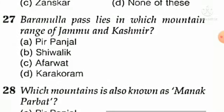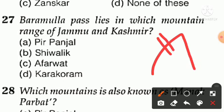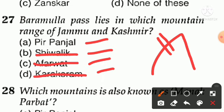Question number twenty-seven: Baramula Pass lies in which mountain range of Jammu and Kashmir? Option A — Peer Panjal, option B — Shivalik, option C — Aferwat, option D — Karakoram. Option D is not right, option C is not right, option B is not right. The answer is Peer Panjal — Baramula Pass is in the Pir Panjal range.